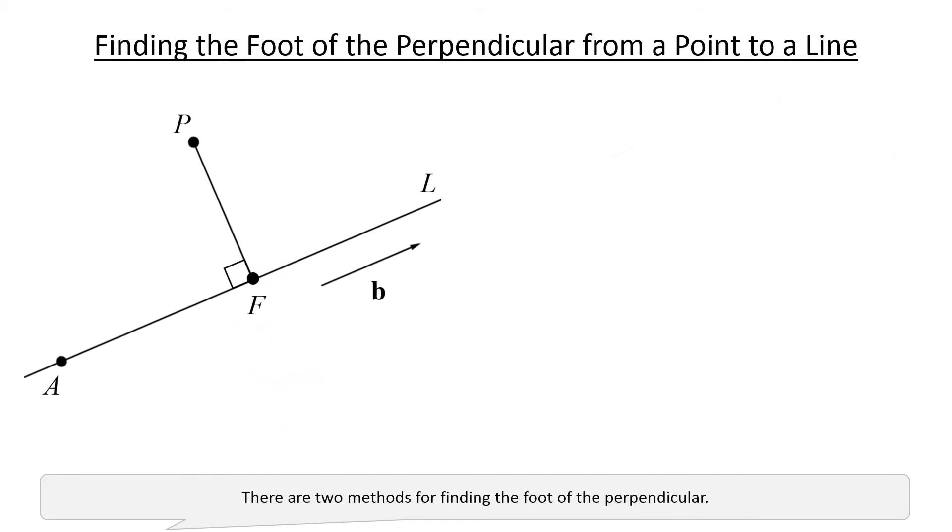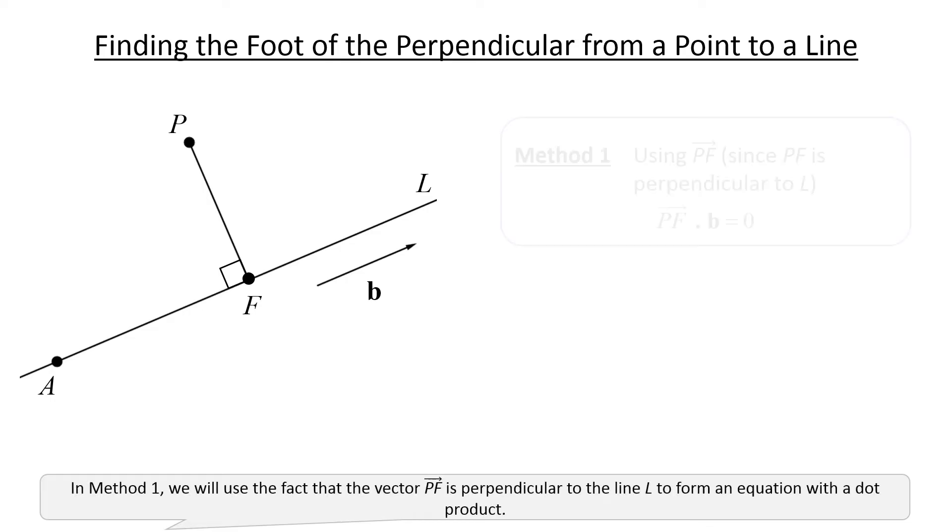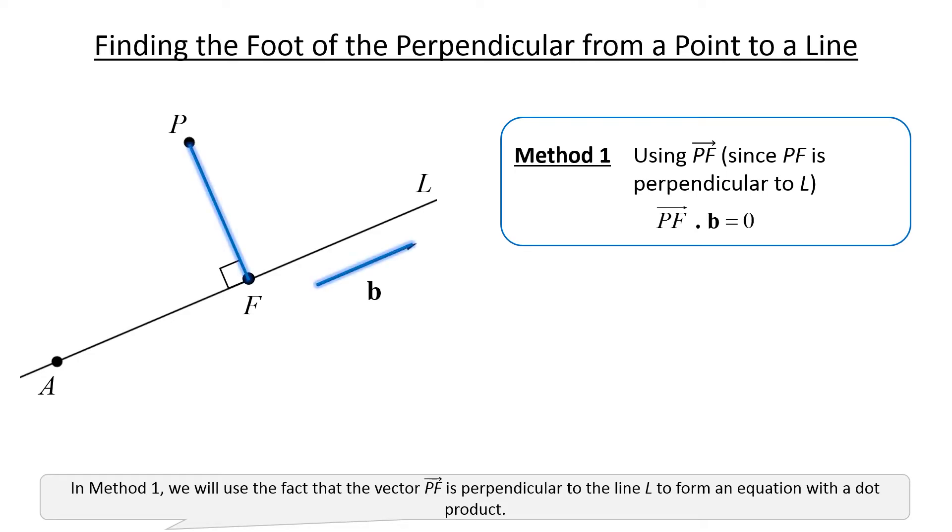There are two methods for finding the foot of the perpendicular. In method 1, we will use the fact that the vector PF is perpendicular to the line L to form an equation with the dot product.